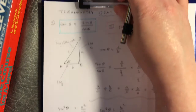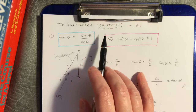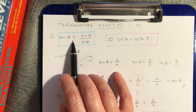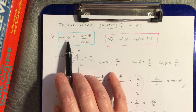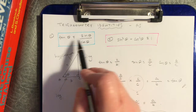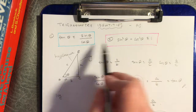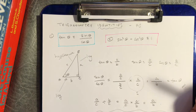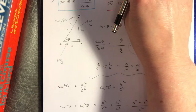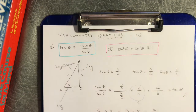Theta can be any angle you like and the relationship holds — that's why we call it an identity. Identities use a special three-bar equal sign, which means the relationship is true for every value of your variable. That's different from an equation, where you're setting two quantities equal and figuring out what variable value makes that true. These are big ones you need to learn and be comfortable with, so let's look at how to use them.